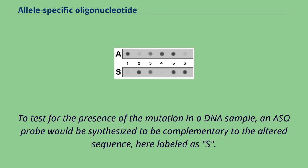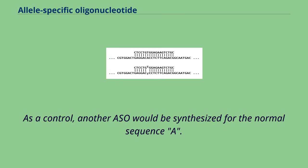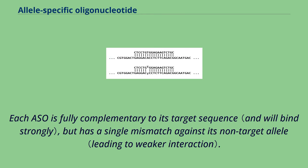To test for the presence of the mutation in a DNA sample, an ASO probe would be synthesized to be complementary to the altered sequence, here labeled as S. As a control, another ASO would be synthesized for the normal sequence A. Each ASO is fully complementary to its target sequence, but has a single mismatch against its non-target allele.